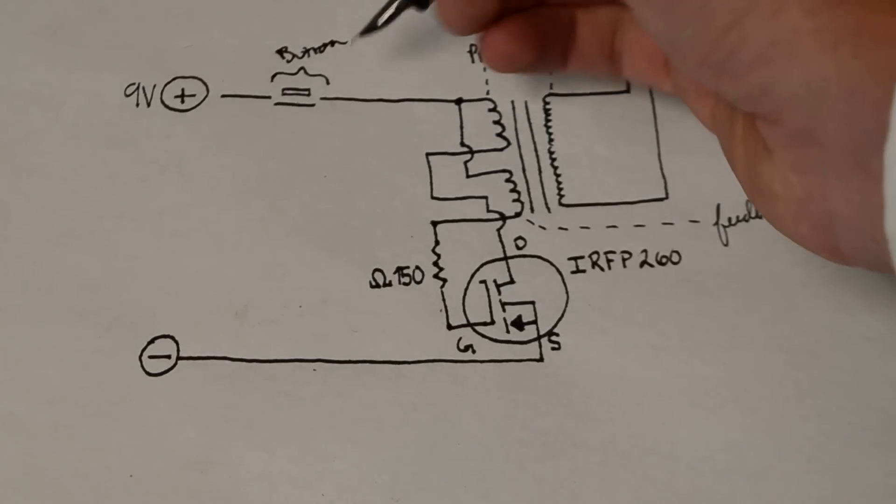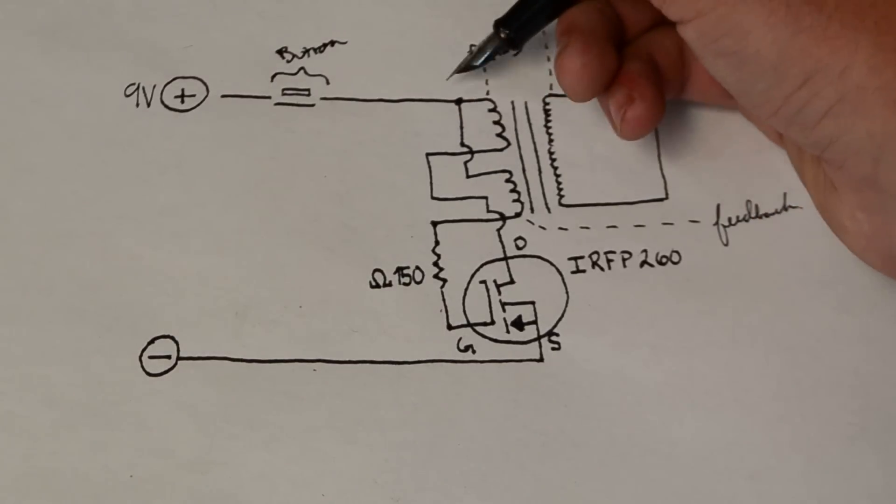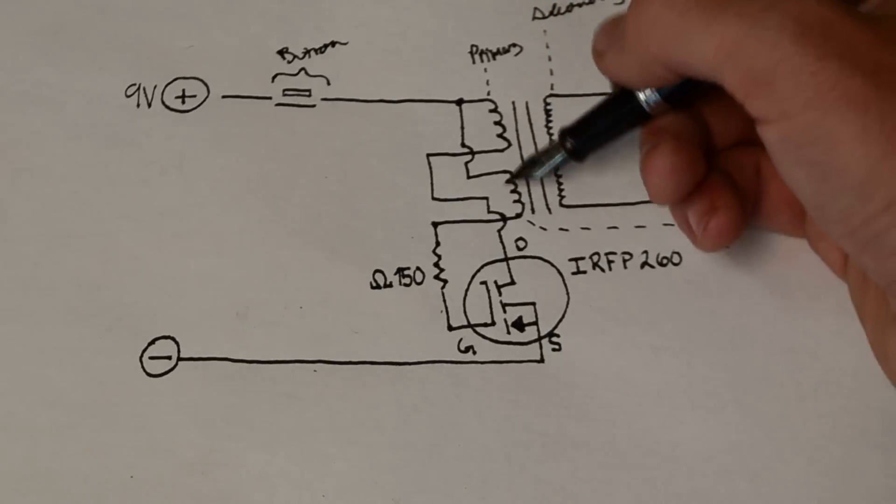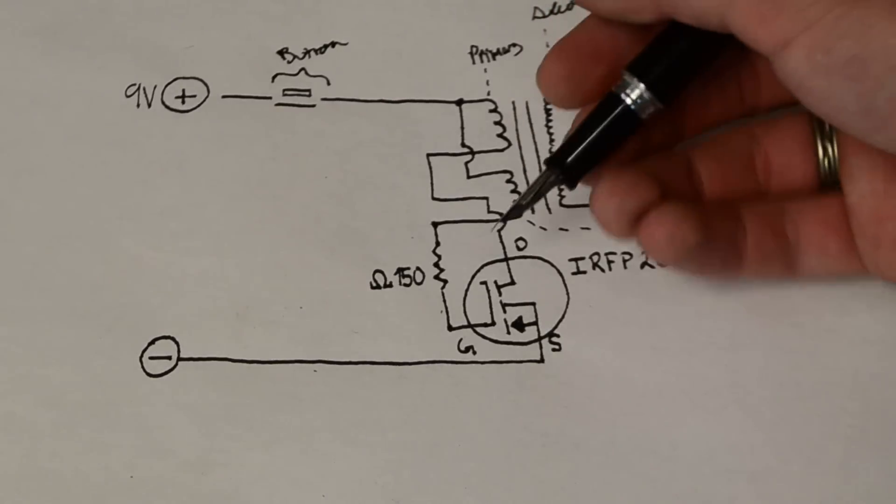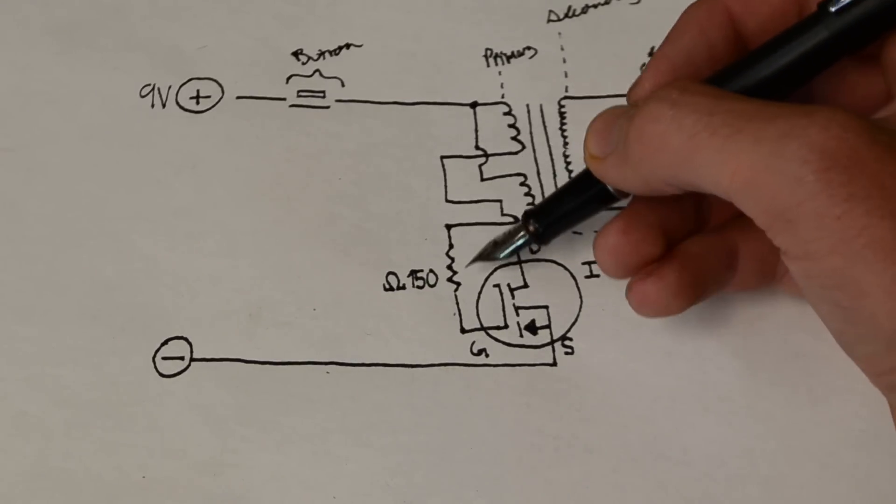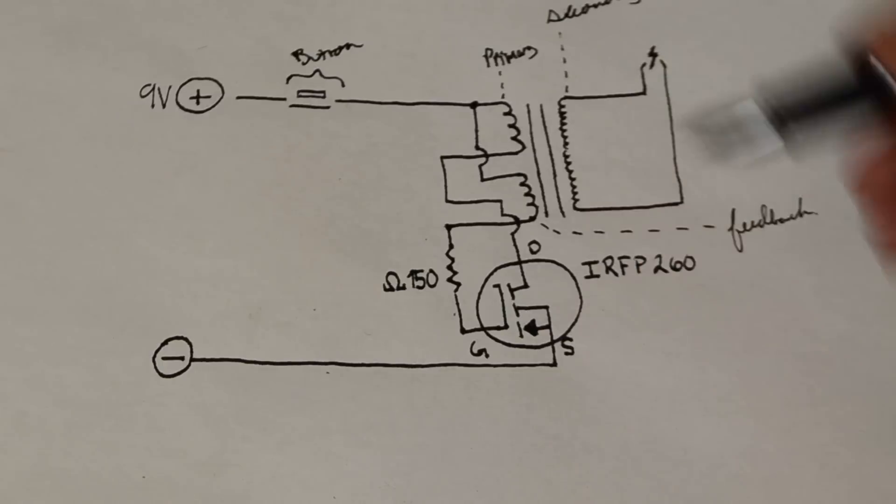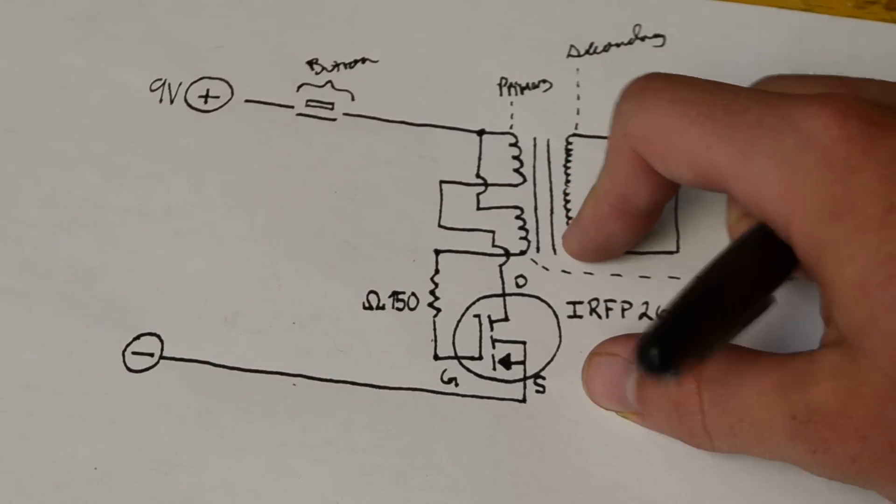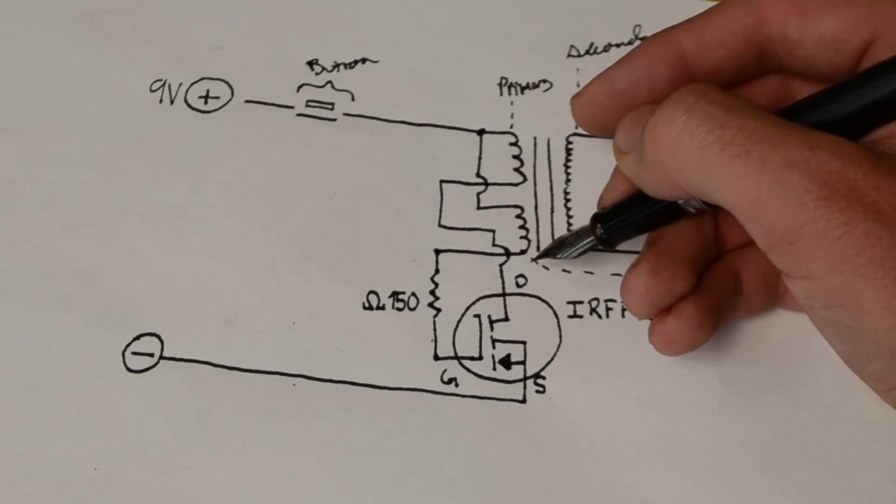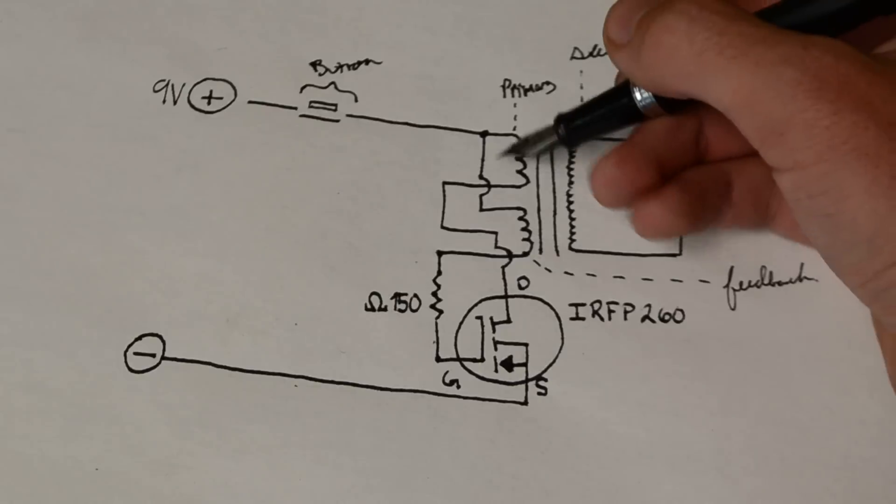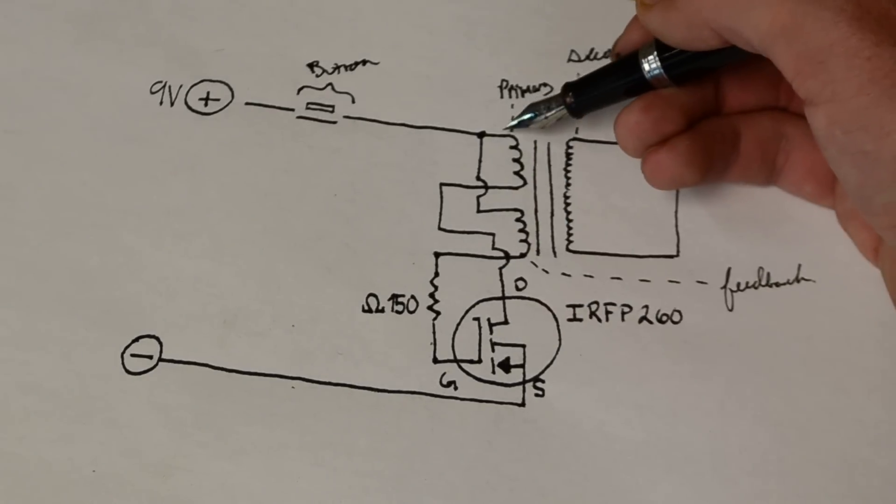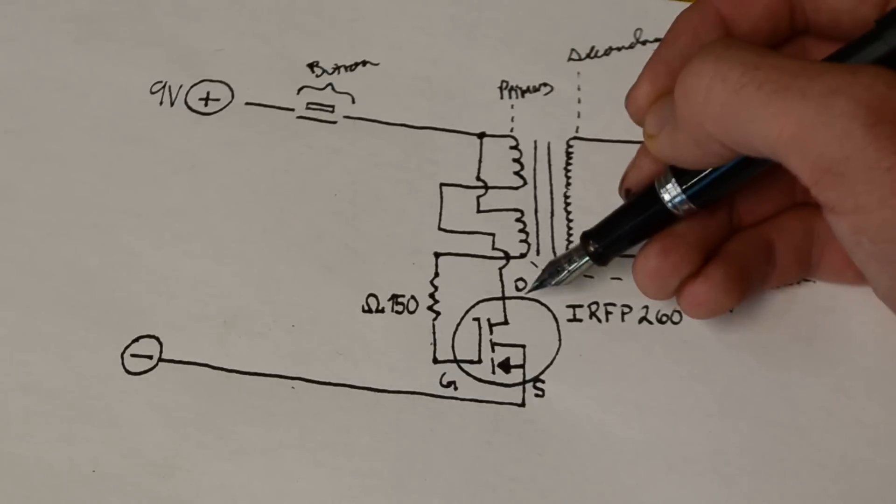When we press the button, voltage flows through the feedback coil to the gate of our MOSFET. MOSFETs work like an electrical switch—when we apply current from gate to source, it allows current to flow from drain to source. When that current flows through the coil and goes here, it activates the MOSFET, allowing current to flow through the primary coil down through the drain to source to ground.